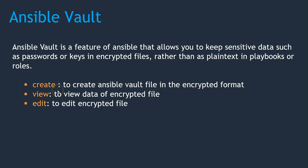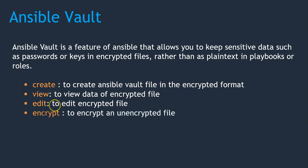If you open the file with cat or vi, it will display in encrypted format — it looks like an ASCII file. Then there is 'encrypt'. If you have already created a plain file that contains sensitive data and you would like to encrypt it, you can use the 'encrypt' option. This converts your existing file into encrypted format.